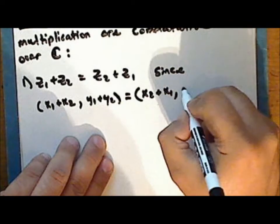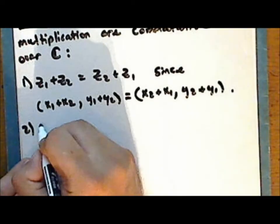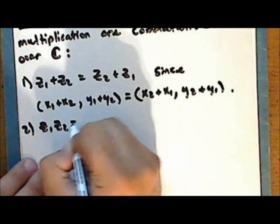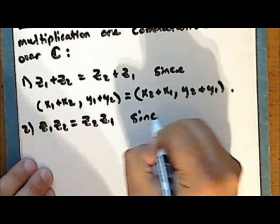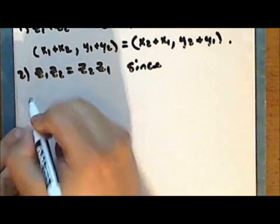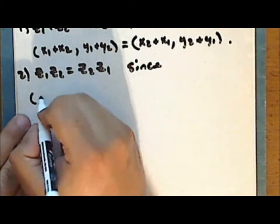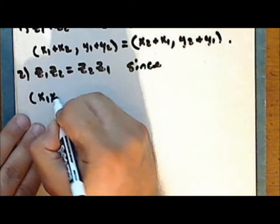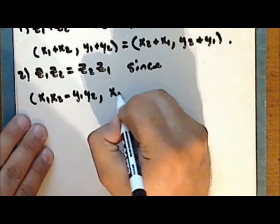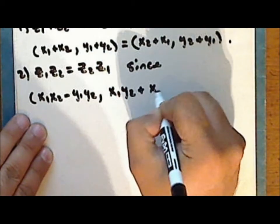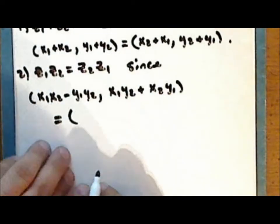Now what distinguishes the complex numbers from the vector space R² over R is that we can multiply complex numbers. z₁ times z₂ is the product of ordered pairs (x₁, y₁) with (x₂, y₂), and this is defined to be the ordered pair whose real part is the difference x₁x₂ minus y₁y₂, and whose imaginary part is the sum x₁y₂ plus x₂y₁.